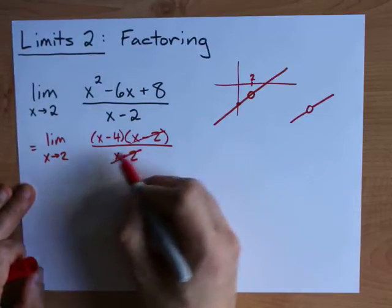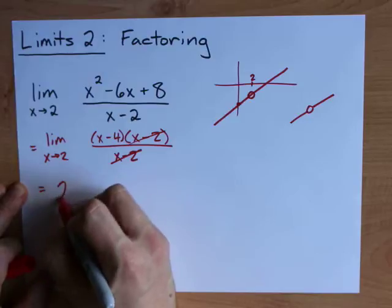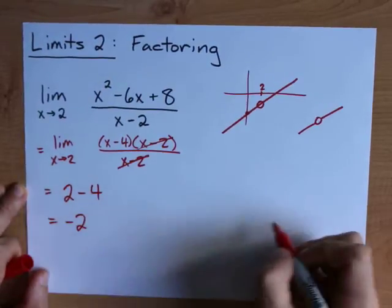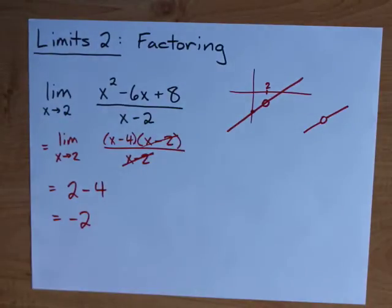Anyways, now that that's cancelled, we can plug 2 in. 2 goes in for x, you subtract 4, and it's negative 2. Which is exactly what the graph is giving us.